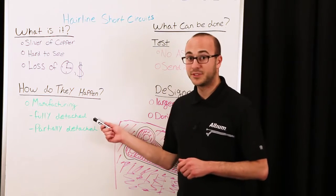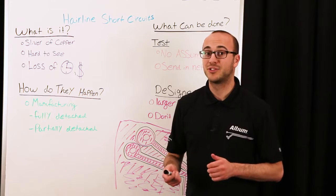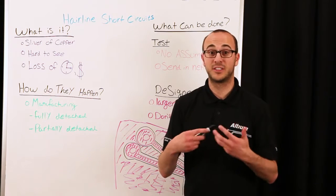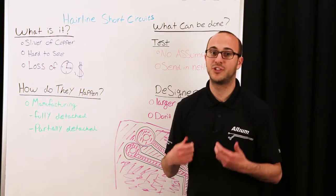Now, sometimes, long slivers of copper are etched and fully detached, but before they can fully dissolve, they land somewhere they shouldn't, connecting two nets and creating a short circuit.